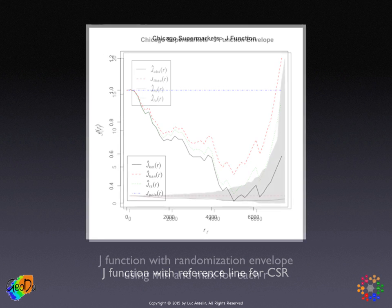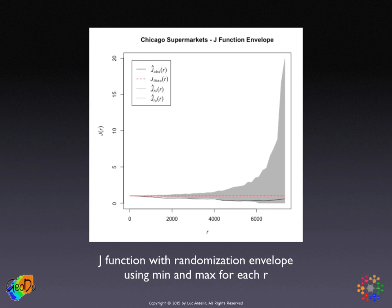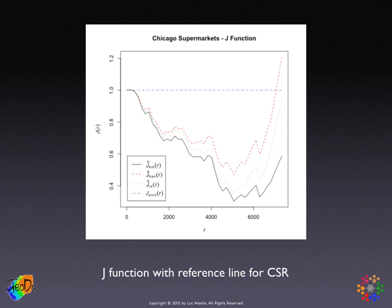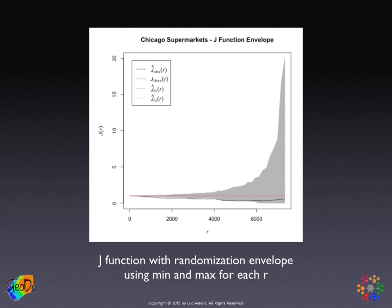When we add the randomization envelope, interpretation becomes more difficult. Without the envelope, the axis ranges from about 0.4 to 1.2, but with randomization we get extreme values — especially at larger distances — ranging up to 20. Because of this, it is hard to see whether the black line is below the envelope without zooming in. However, the line is below the envelope at least for a range of the distances considered.